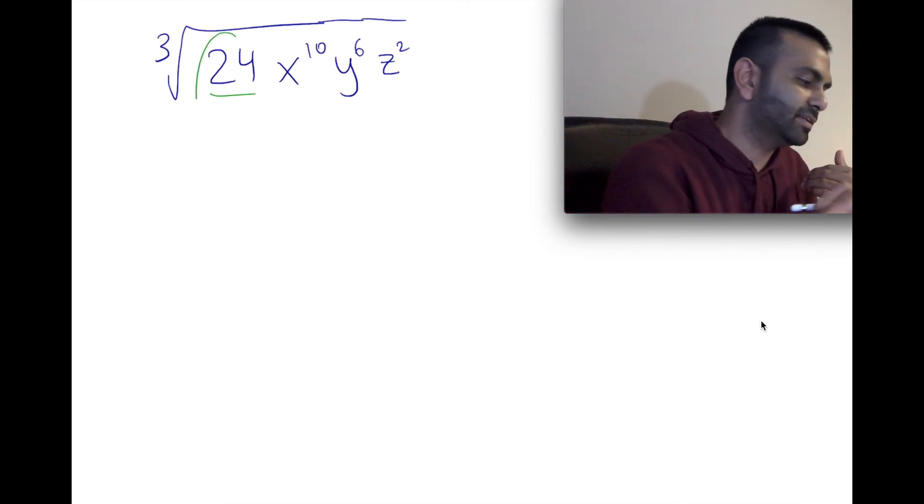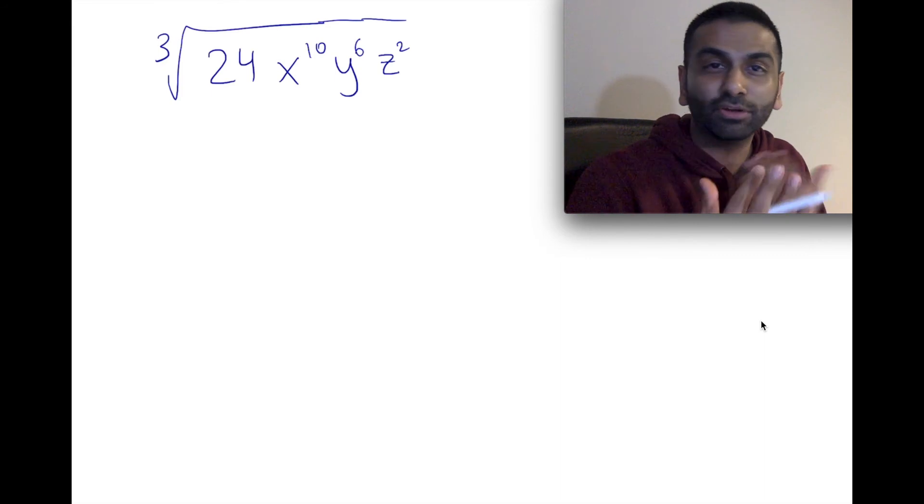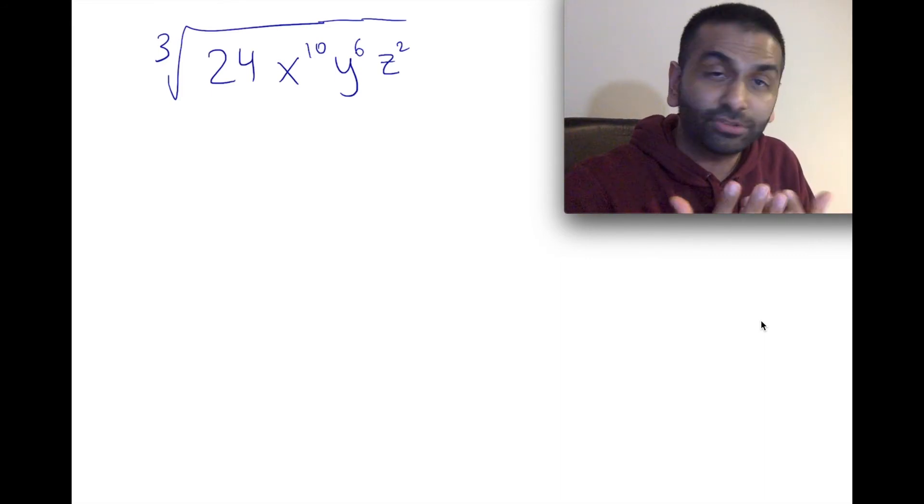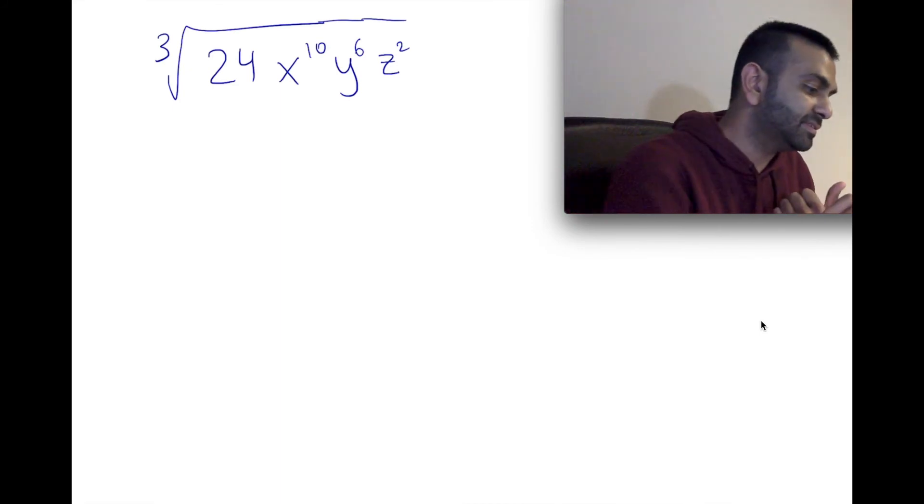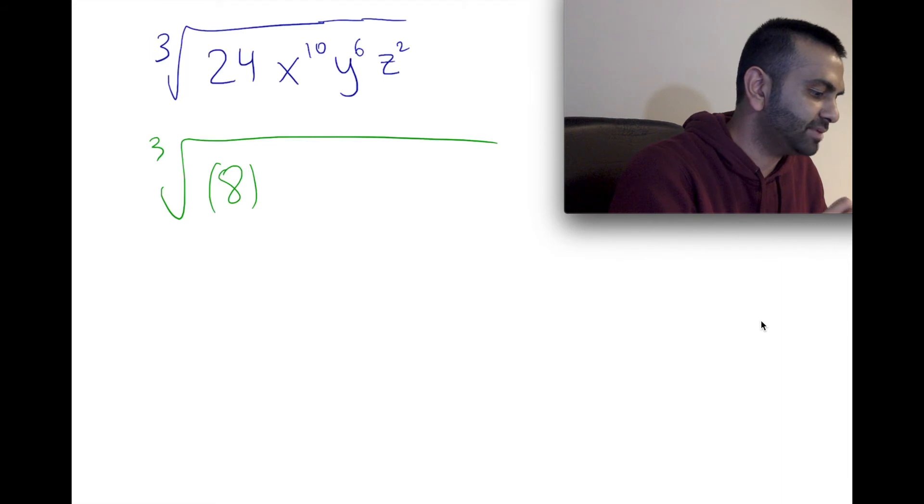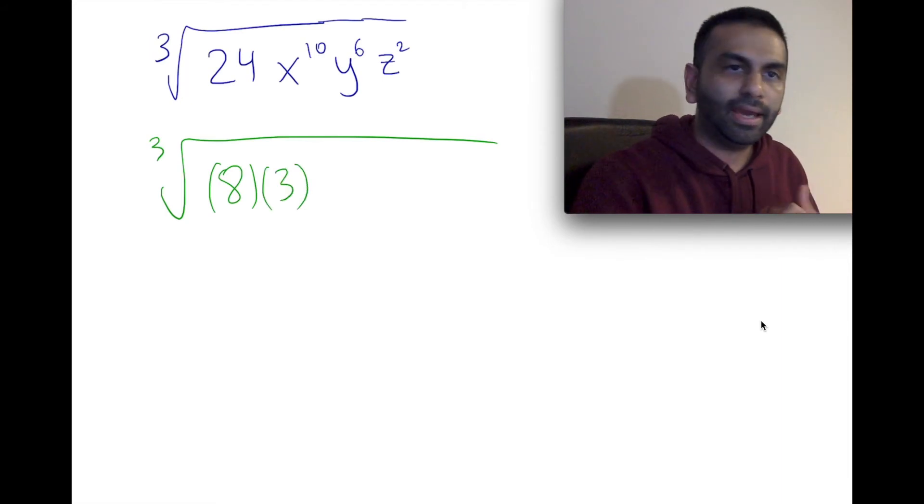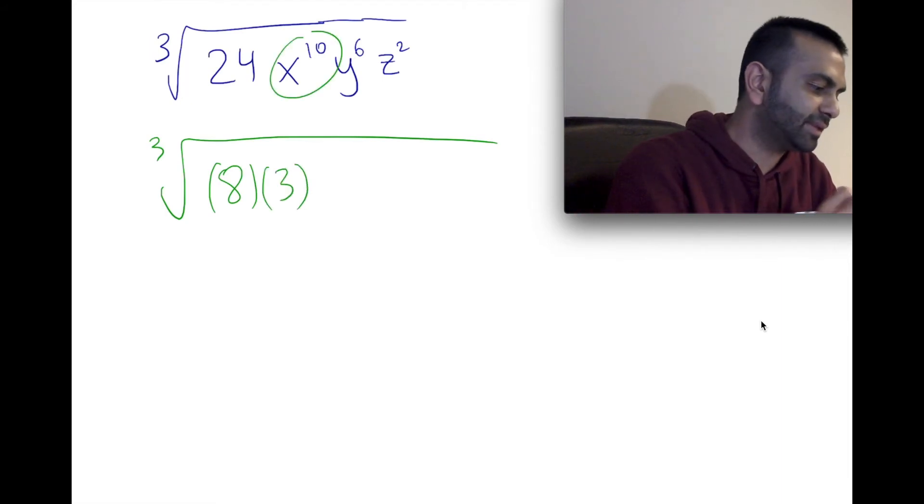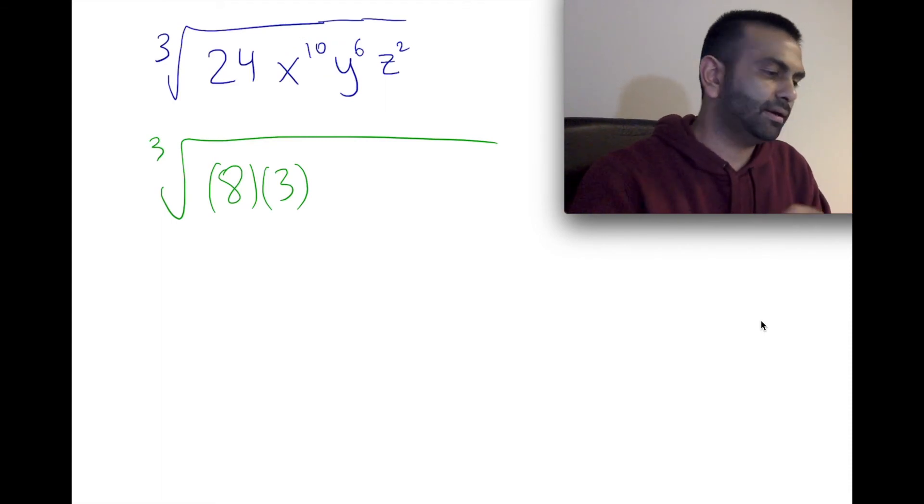So right off the bat, we can break this down as, let's see, the only perfect cube that even seems within reason is 8, which is 2 cubed. But this can be broken down as 8 times 3. So here I'm going to first write this as 8 times 3. And while we're here, let's see what we can break these down.